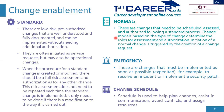Change models, based on the type of change, determine the roles for assessment and authorization. A change model is like a template that could include a procedure for a certain type of change, responsibilities, escalation mechanisms, and the structure of the change form. Depending on the type of change, it may trigger different procedures for authorization, implementation, testing, and backing out the change. So a change model is a structure to handle different types of changes, and having it pre-defined makes it easier to process normal changes faster.